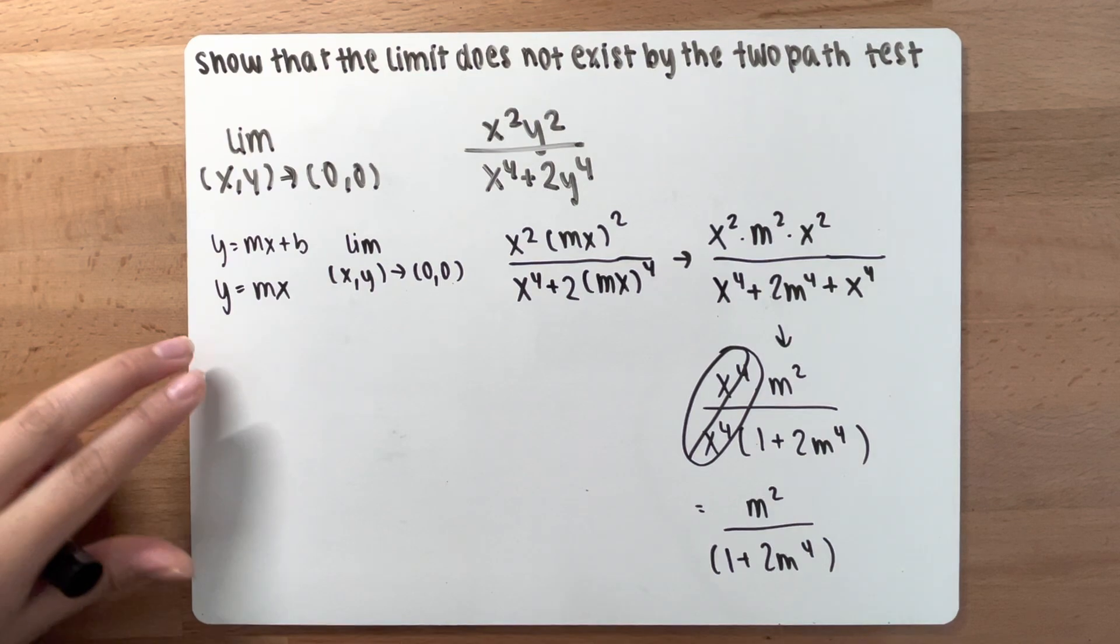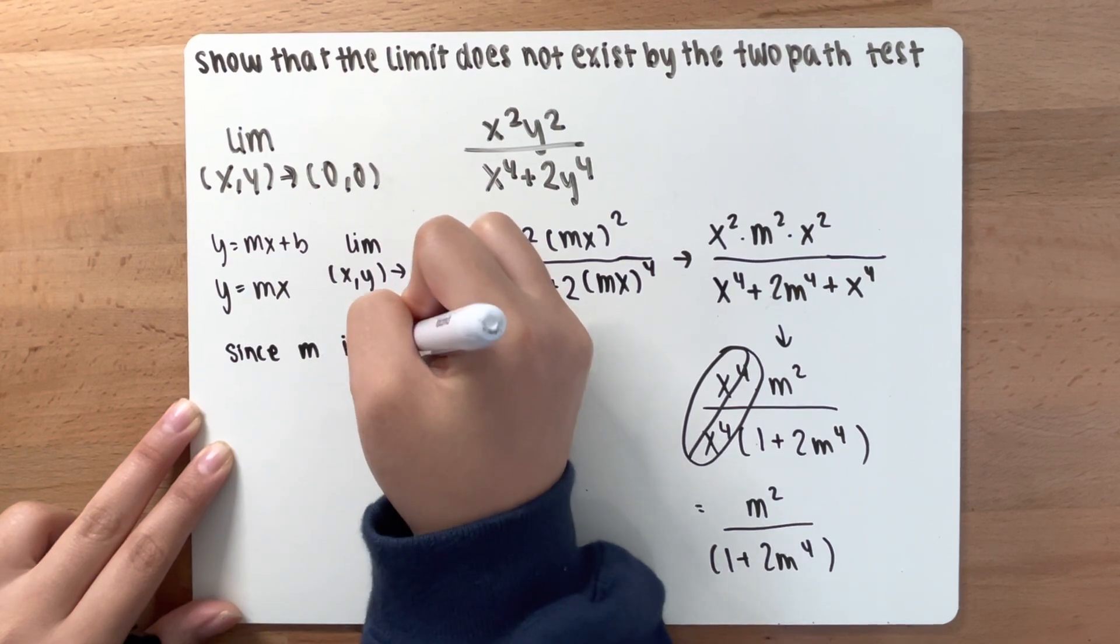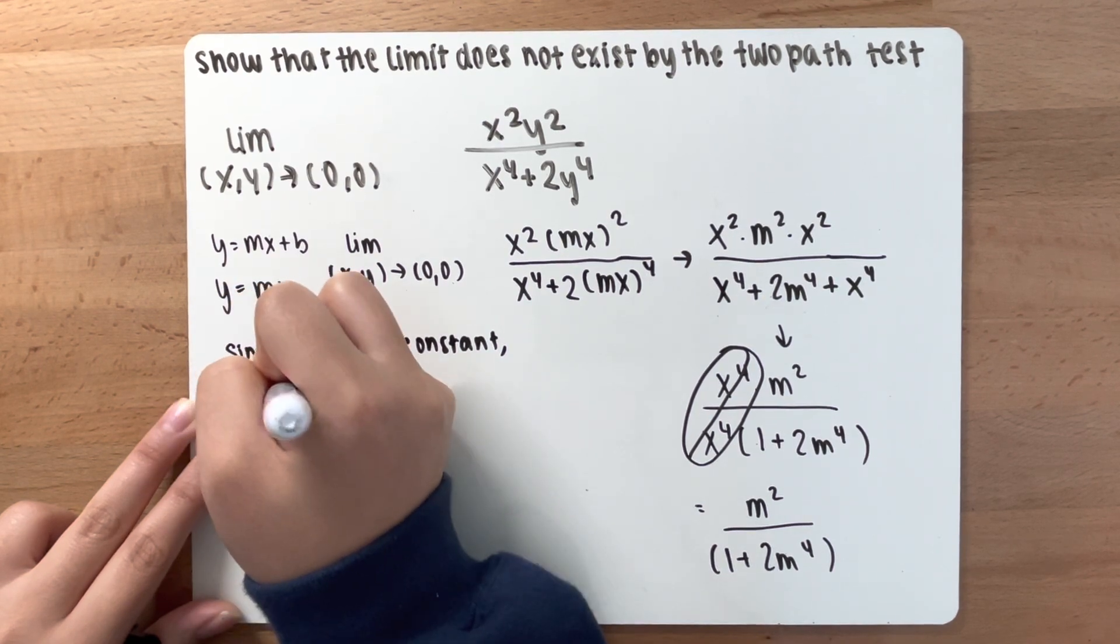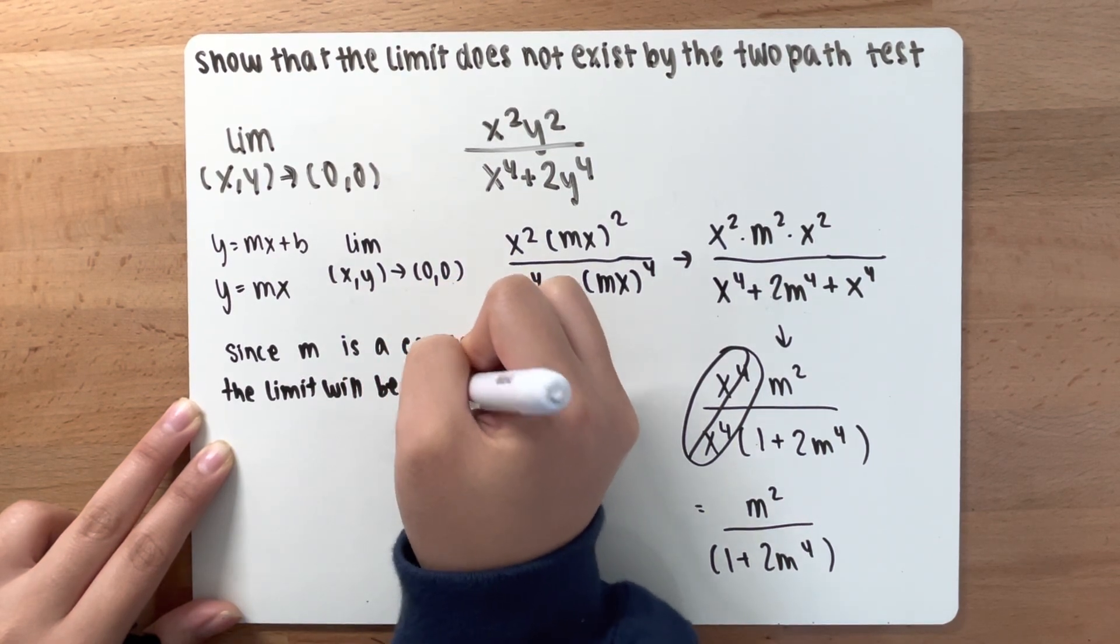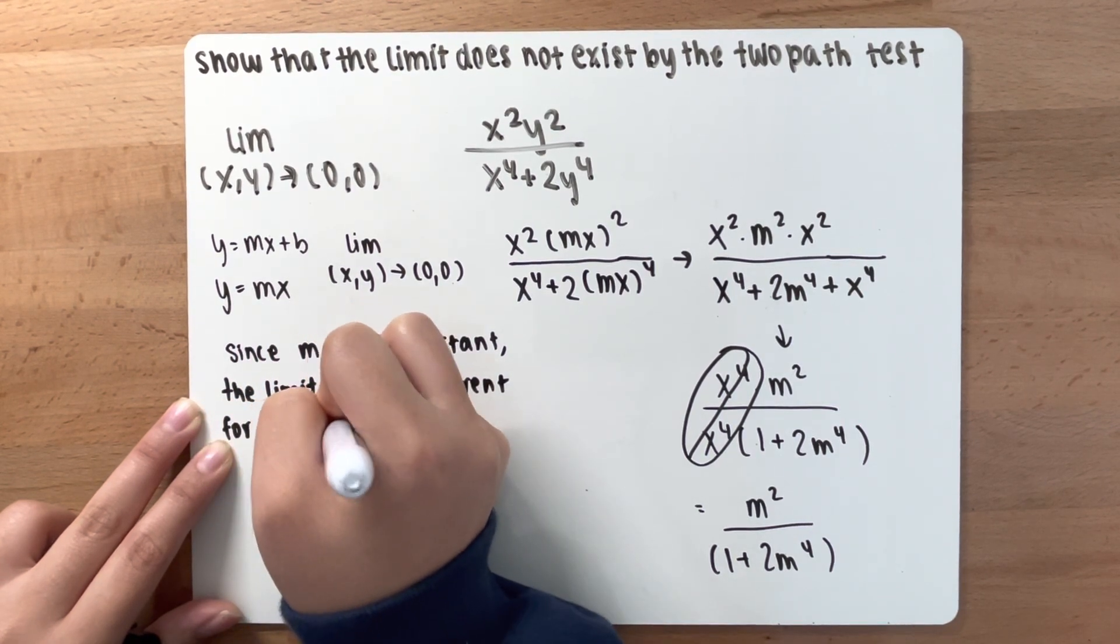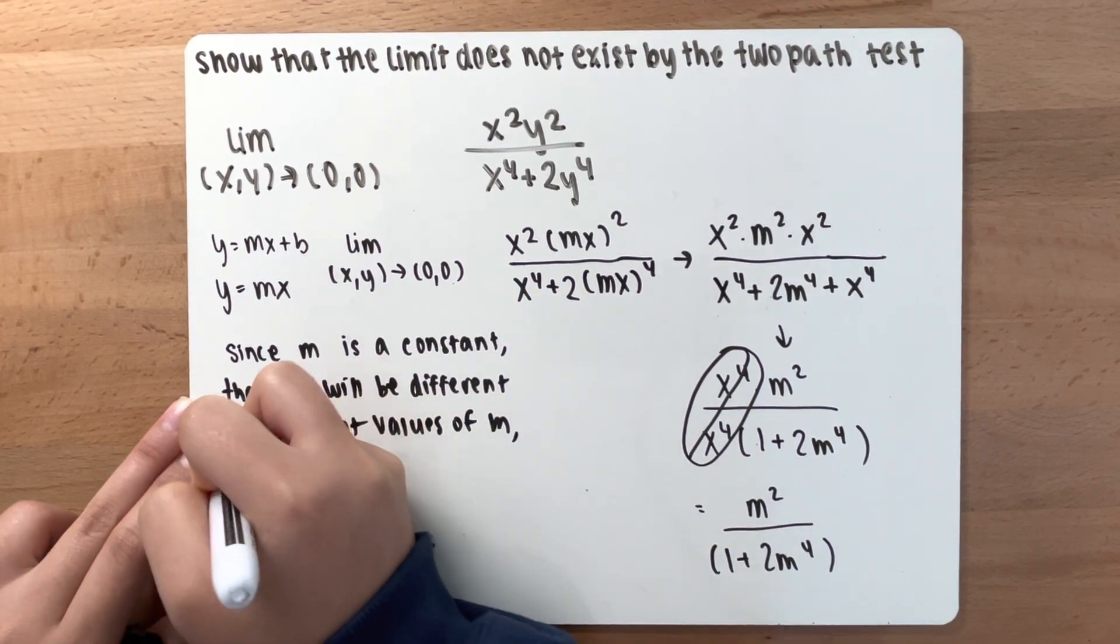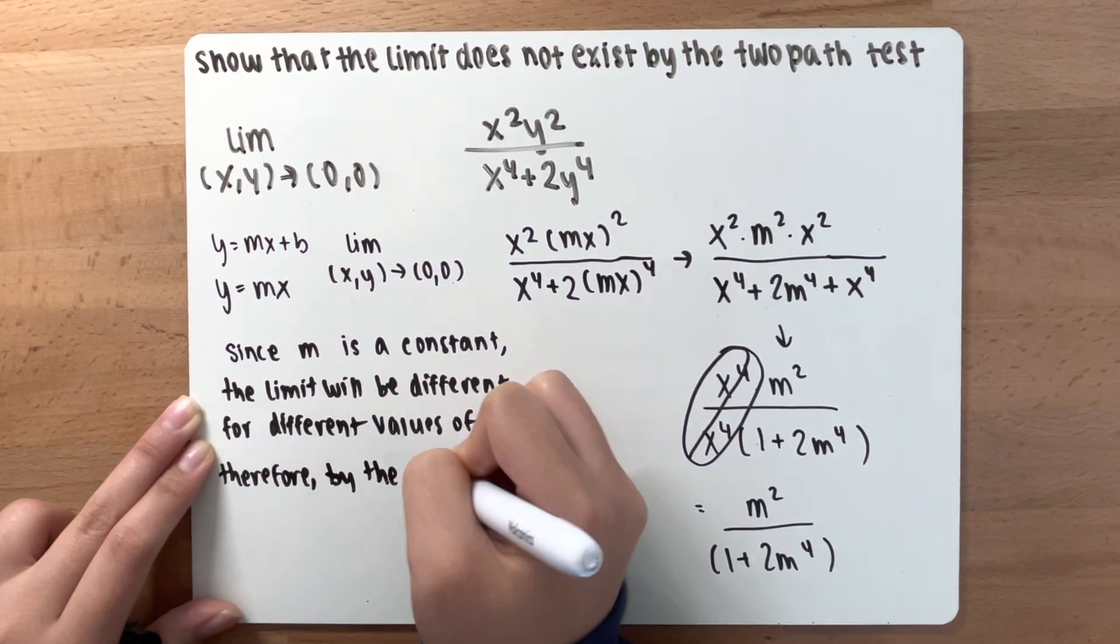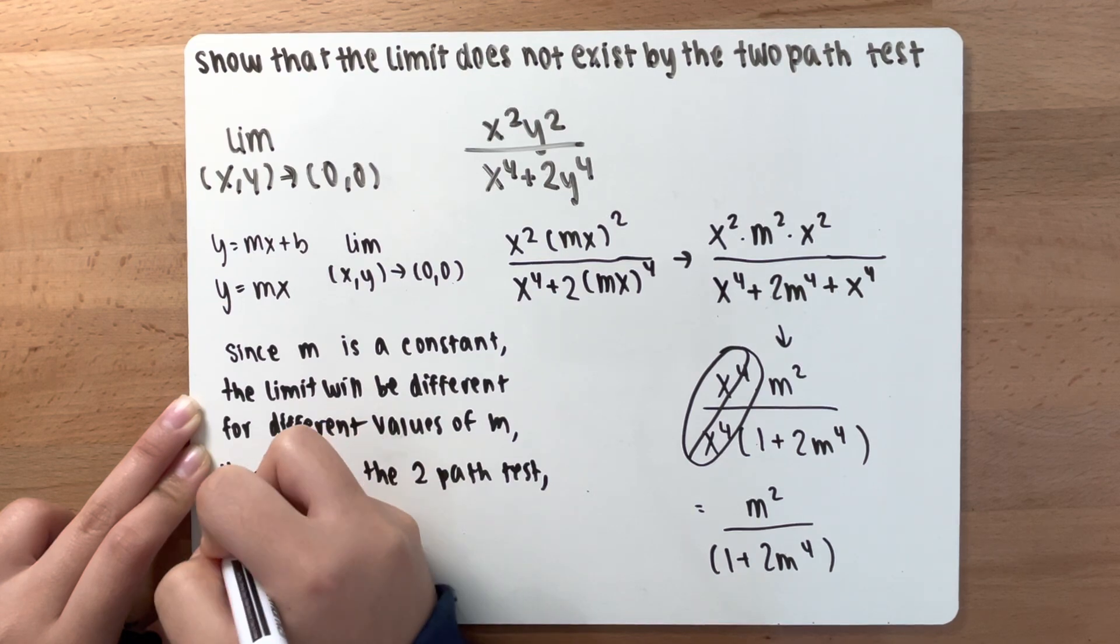So I'm going to write this down. Since m is a constant, the limit will be different for different values of m. Therefore, by the two-path test, the limit does not exist.